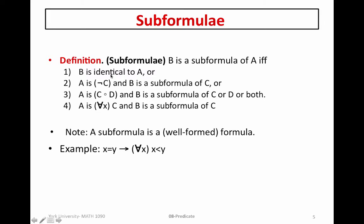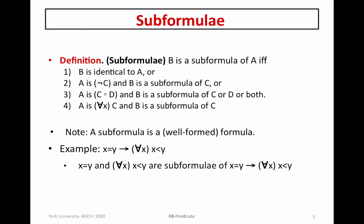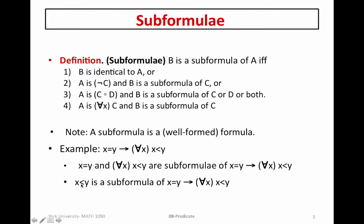Because X equal to Y is a formula, B is identical to that one, and this is a sub-formula of this form. So here is C, and C is identical to itself, so it's a sub-formula using number 3 of the definition. Similarly, for all X, X less than Y is the sub-formula of D. Both of these are sub-formulas of our well-formed formula. Going a step deeper, X less than Y is another atomic formula that occurs within this larger formula, applied by rule 4. So there are three sub-formulas: X equal to Y, for all X X less than Y, and X less than Y.